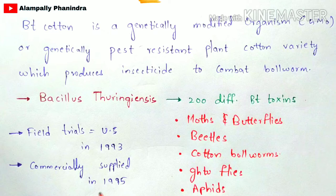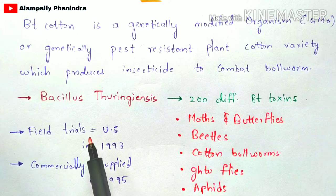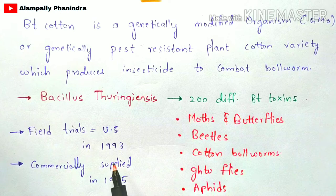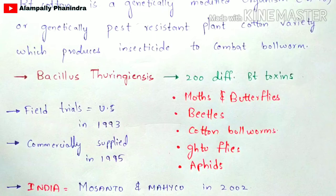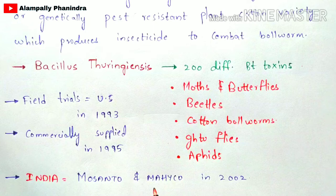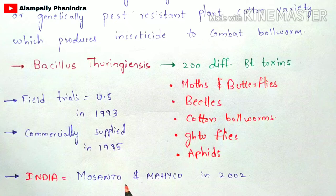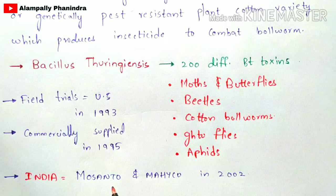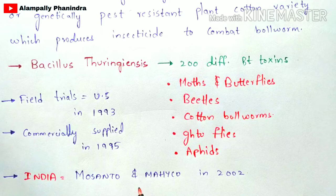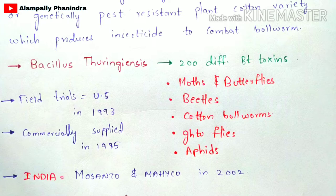BT cotton field trials were first done in the US in 1993, and it was commercially supplied to farmers in 1995. In India, Monsanto and Mahyco are the two agricultural companies that were the first to approve BT cotton field trials. They were successful, and BT cotton was approved for cultivation in India in 2002, after which it was supplied to farmers.